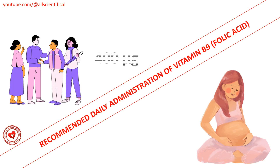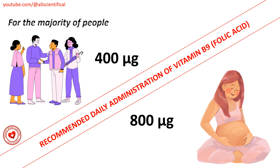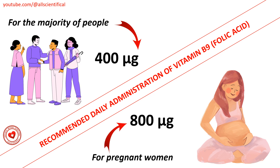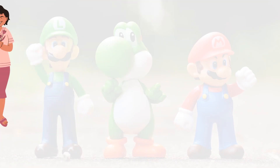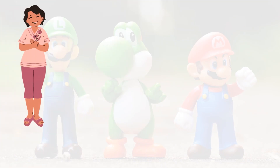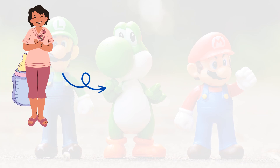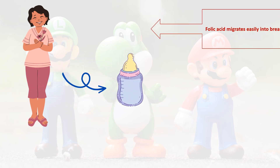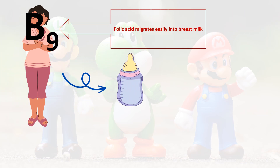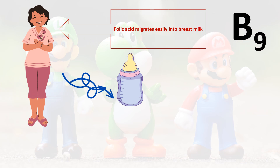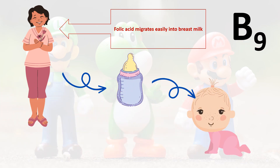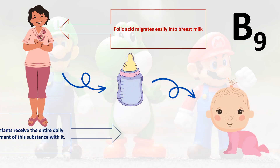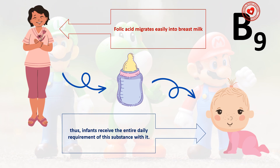Recommended daily intake of vitamin B9: the recommended daily intake of folic acid is 400 micrograms, and for pregnant women it is 800 micrograms per day. Folic acid easily migrates into breast milk, so babies receive the entire daily requirement of this substance.